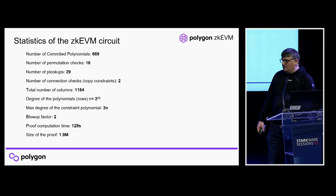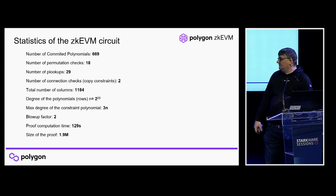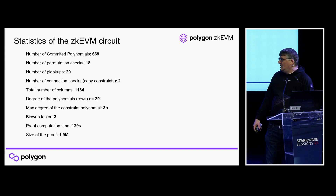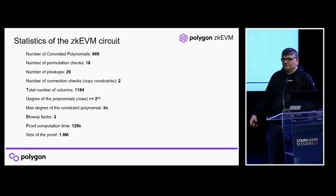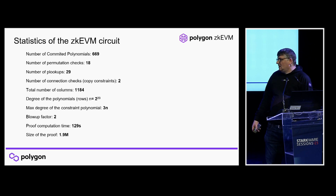This proof is huge — we are working with 2^23 polynomials, 669 polynomials at this point, 18 permutation checks, 29 lookup tables (PLOOKUPs), and 2 copy constraints. This gives a total width of more than 1,000 columns in the STARK, which is a big STARK. We are applying a blowup factor of 2, and the size of this proof is about 2 megabytes.